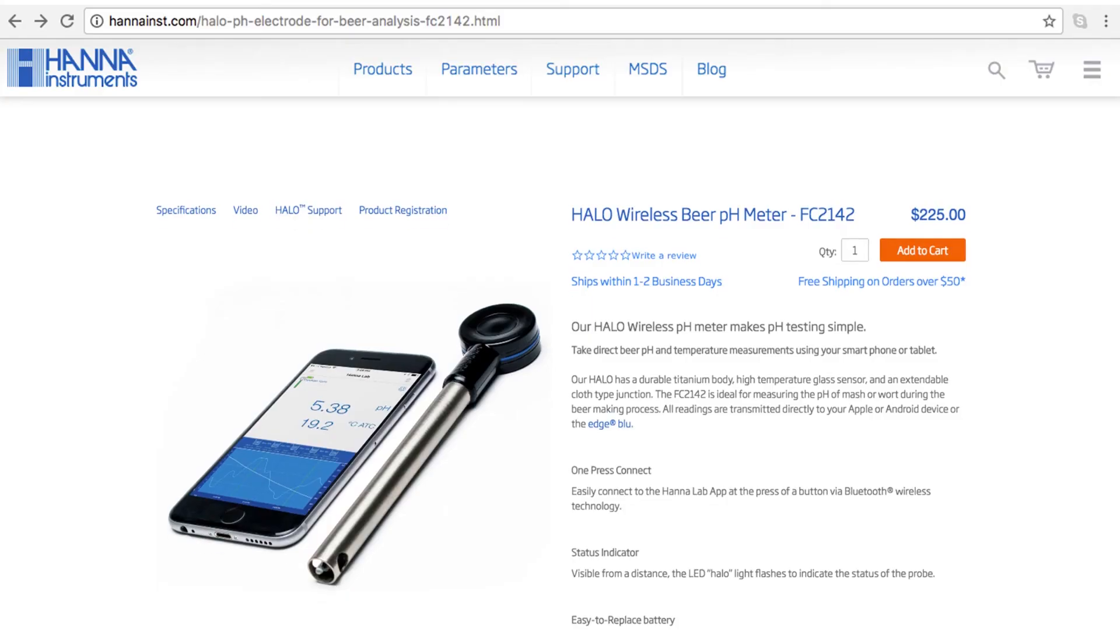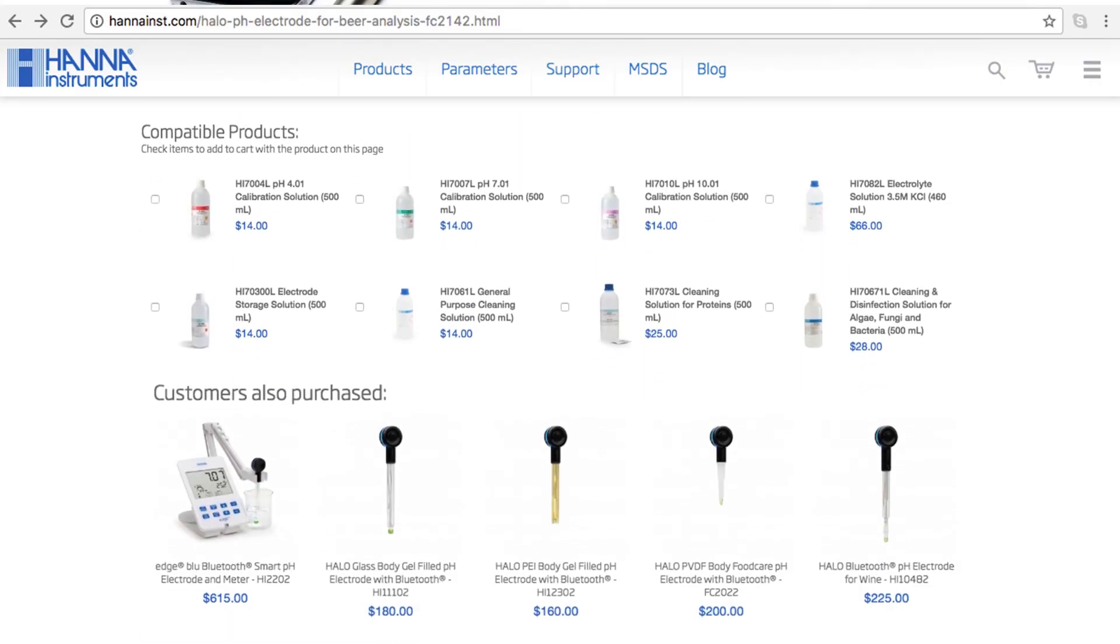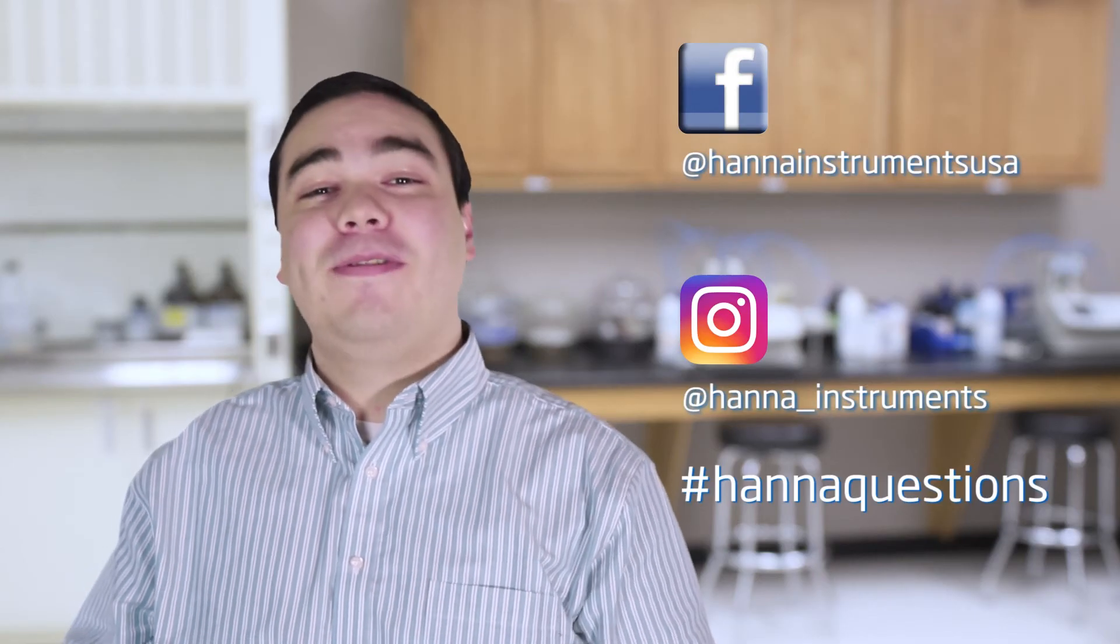So that's it! Our Halo wireless pH meter makes pH measurement easier and more accessible than ever. You can find everything you need for your Halo at hannahins.com. Buffers, solutions, and other products can be found right on the product page. Thanks for stopping by, and we hope you found this helpful.